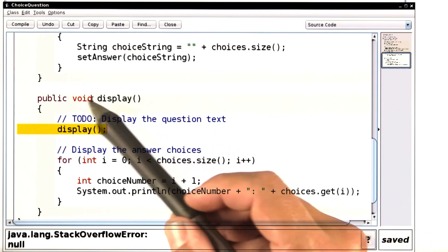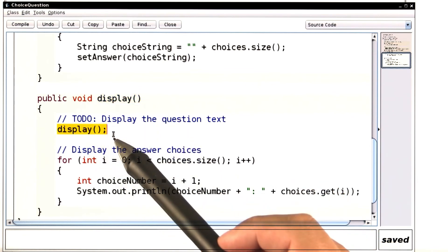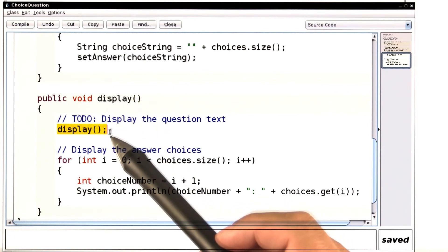Why itself? See the method is called display, and here it calls itself. That's a problem. I didn't want to call my own method. I wanted to call the display method of the question class.